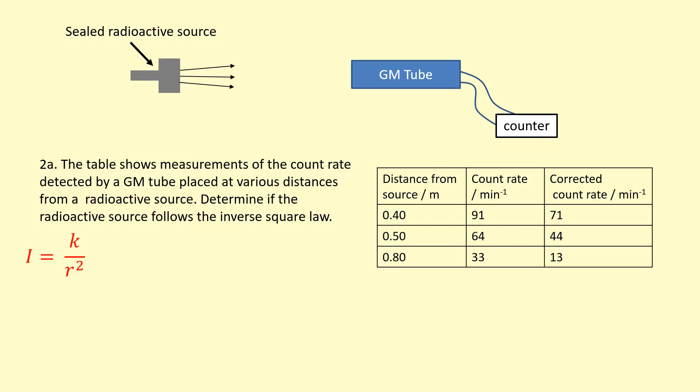That k there is a constant, and one way to check if this data follows the inverse square law is to check if k, which I've rearranged for right here, is actually a constant. So I'm going to do the intensity. In this case, I'm going to use the count rate as the intensity and times the distance squared.